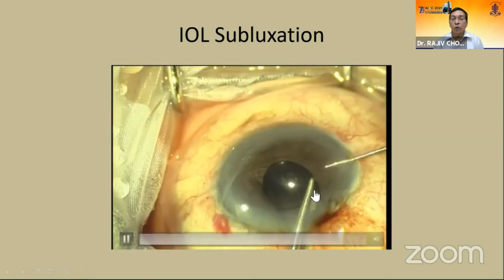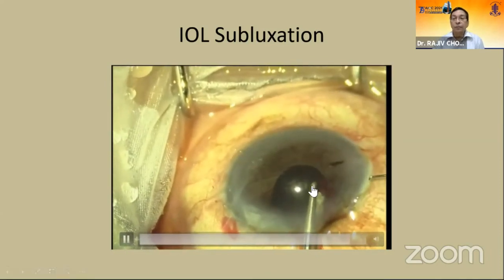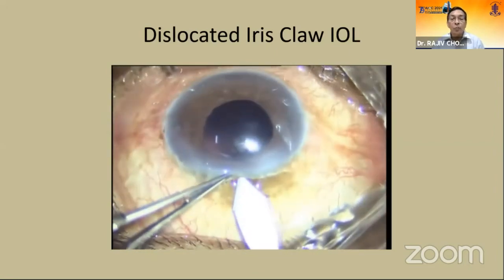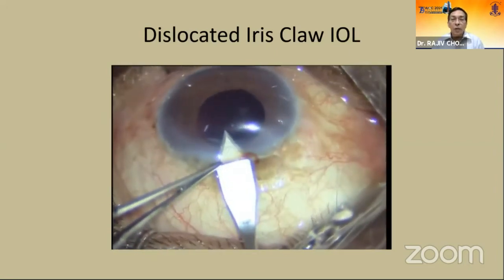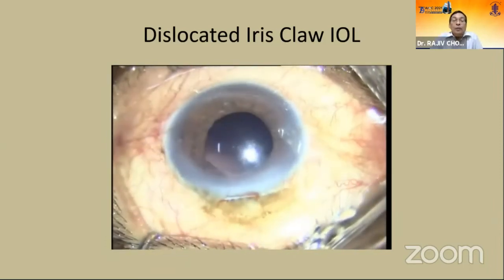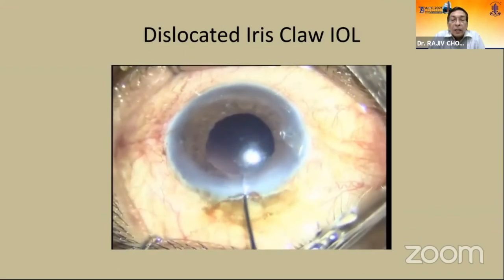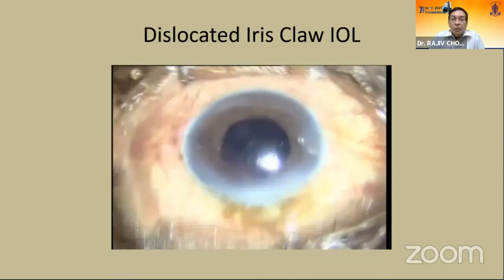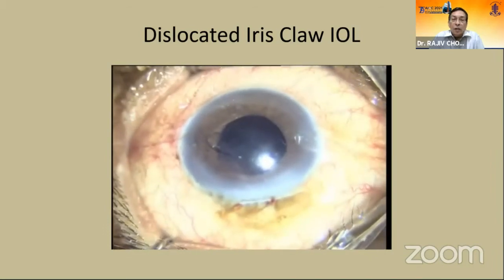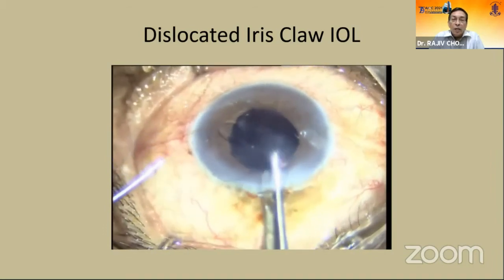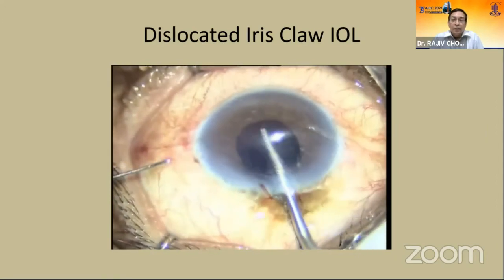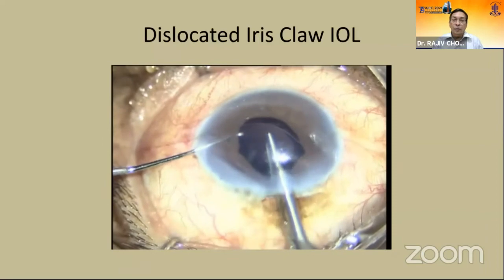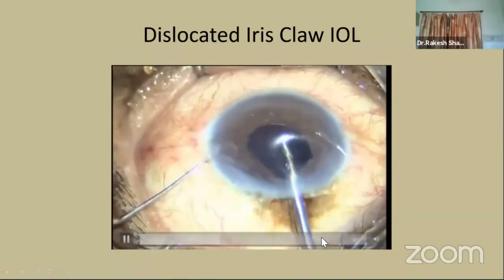Fear of lens dislocation due to iris atrophy is very rare. The advantage of iris claw is that whenever it dislocates, it is always one side that de-enclaves and you can easily re-enclave it. A case is shown where the lens dislocated from the left side — we simply brought the lens up into the anterior chamber and re-enclavated it in the same position. Irrigation to remove viscoelastic.